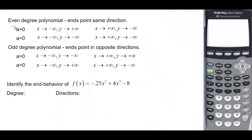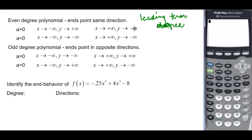Let's talk about these end behaviors. An even degree polynomial — don't mix this up with even function symmetry. This just means that we have a 2, 4, 6, or higher even number as our leading term degree. If a is greater than 0, as x goes to negative infinity, y goes to positive infinity, and as x goes to positive infinity, y also goes to positive infinity — the ends go the same direction. If a is less than 0, both ends go to negative infinity. So for even degree, the ends are the same.